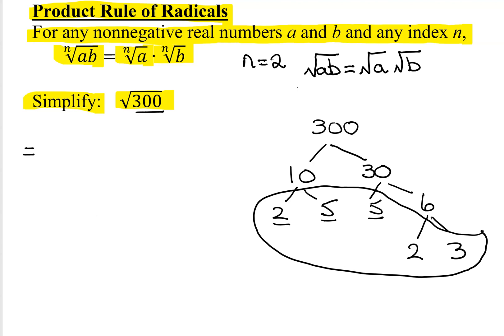I'm going to take my 300, and I can write this lots of different ways, but I think it's helpful if I group together pairs. So if I look at this, 2 times 2 is 4. Do I have any other pairs? Yes, I have 5 times 5 is 25. And do I have any other pairs? No, I just have a plain old 3.